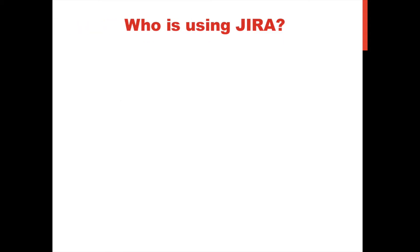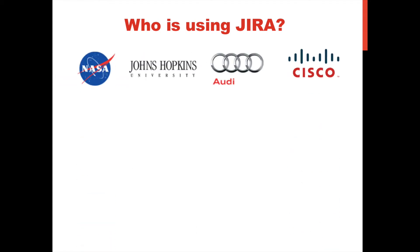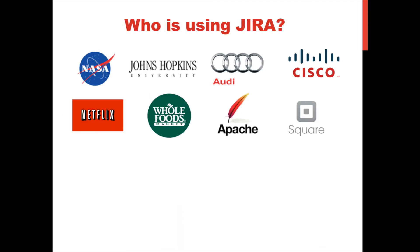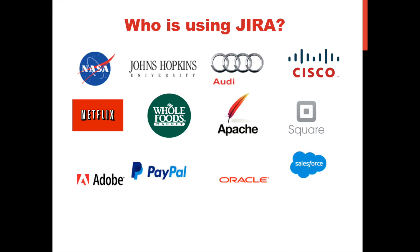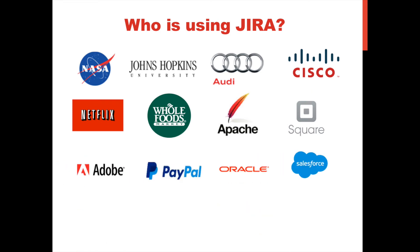Who is using Jira? Let's take a quick look at who is using Jira. Jira is being used by big and small companies and government associations alike. It's being used by NASA, John Hopkins University, Audi, Cisco, Whole Foods, Square, PayPal, Adobe, just to name a few.